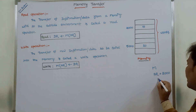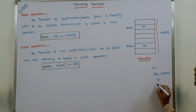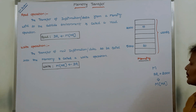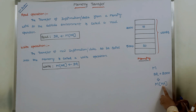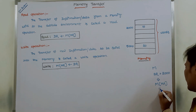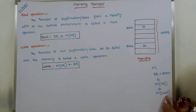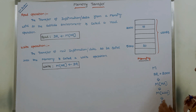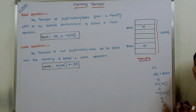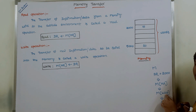This can be represented in symbolic form as M of AR, where AR is the address register. The address register contains the address 2000, so M of AR is nothing but M of 2000, meaning the content of memory address 2000. The value stored there is 10 — that is, the data or information value is 10. The value 10 is stored in the 2000 address of a particular memory word.